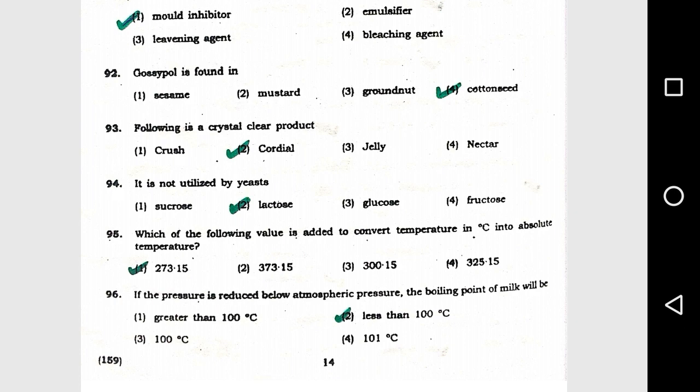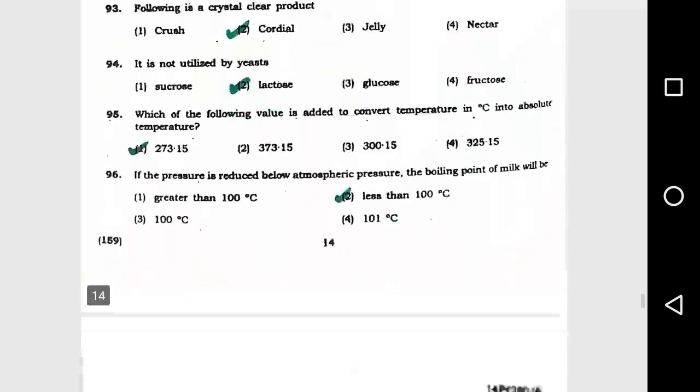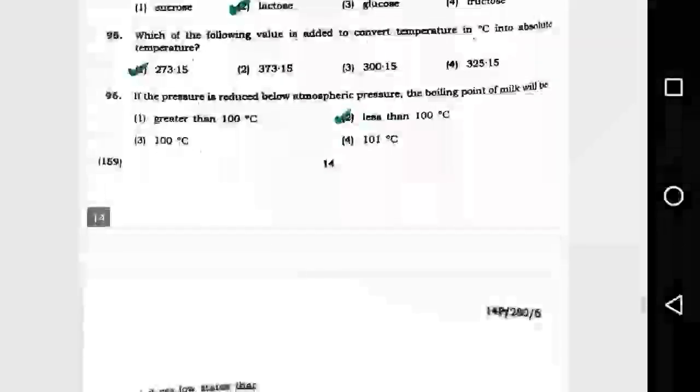Question number 93: Following is a crystal clear product: option 2, cordial. Question number 94: It is not utilized by yeast: option 2, lactose. Question number 95: Which of the following value is added to convert temperature in degrees Celsius into absolute temperature? Option 1, 273.15.